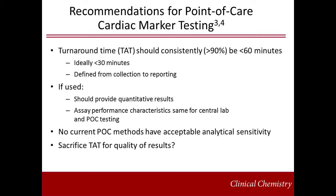Point-of-care cardiac marker testing is also an area that is commonly debated. The National Academy of Clinical Biochemistry guidelines recommend that the turnaround time for troponin be less than one hour over 90% of the time. Ideally, the turnaround time would be less than 30 minutes, with timing defined from collection to reporting. If point-of-care testing is used, the results should be quantitative, and the analytical characteristics of the point-of-care test should be identical to the central lab's troponin assay. Currently, there are no point-of-care methods that have acceptable analytical sensitivity, and it is often argued that turnaround time is essentially sacrificed for a lower-quality result.